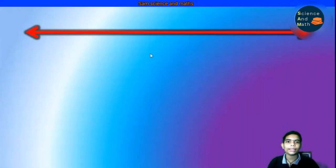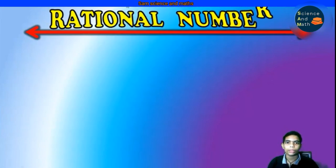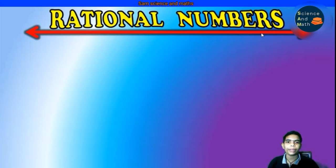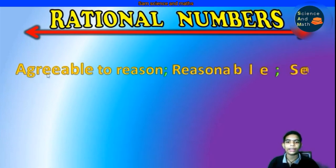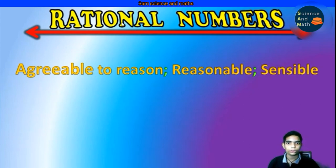Hi friends, today let us discuss about this amazing topic of class 9 in mathematics, that is rational numbers. Before we dive into the topic, let us understand what is this word rational — what is the meaning of rational? It is agreeable to reason, reasonable or sensible. So rational numbers are sensible numbers; they have some sense in them.